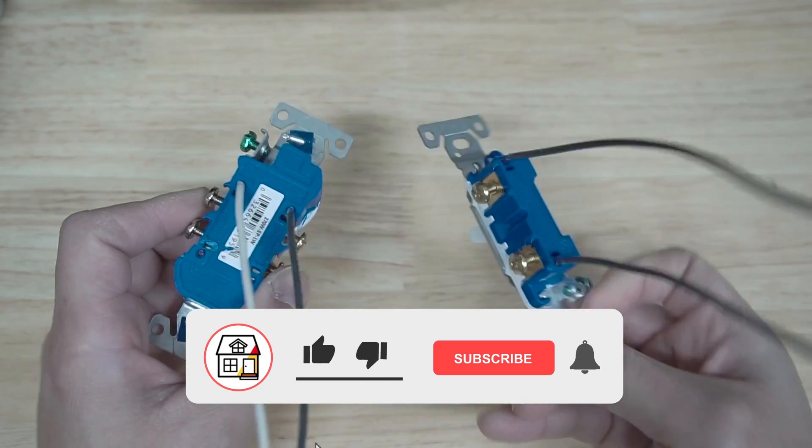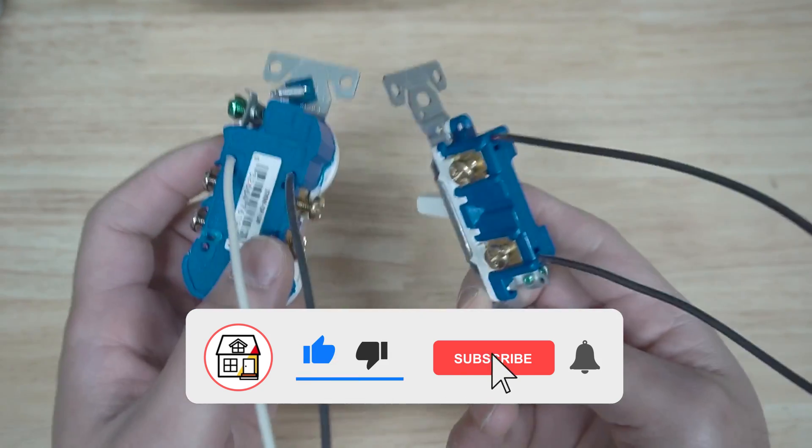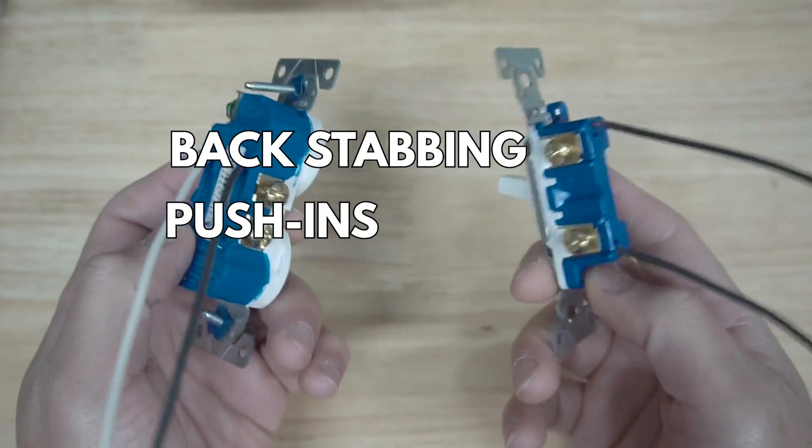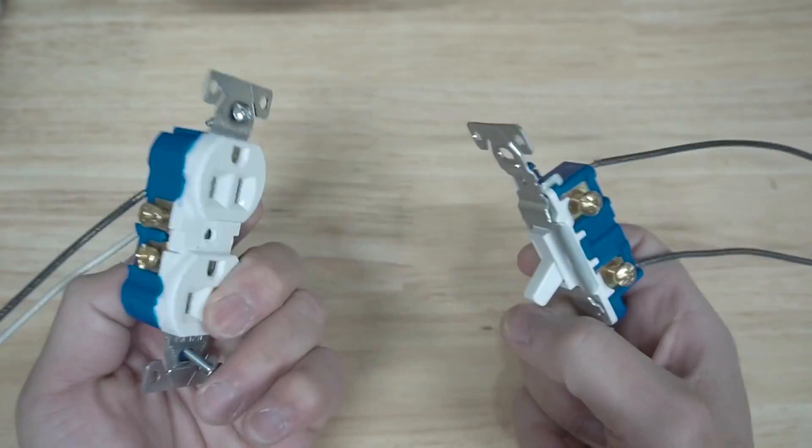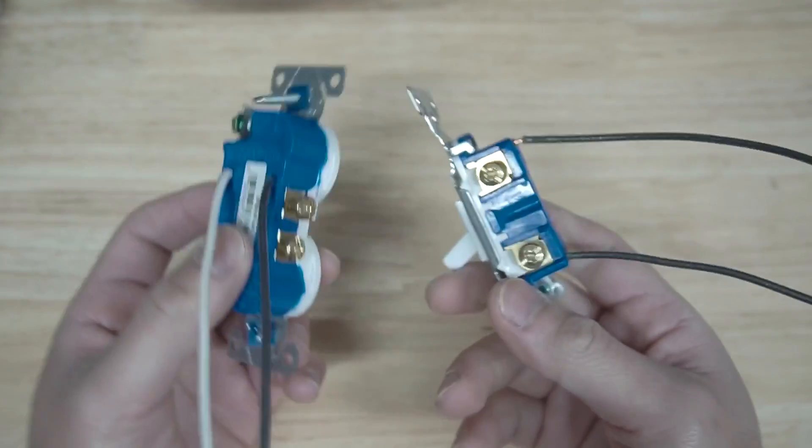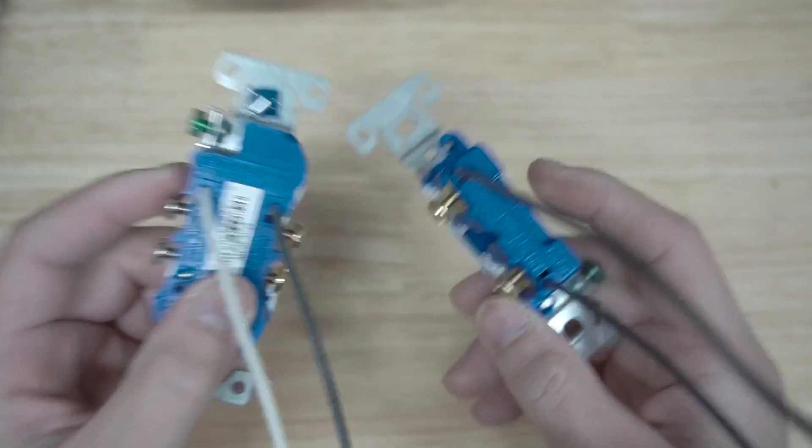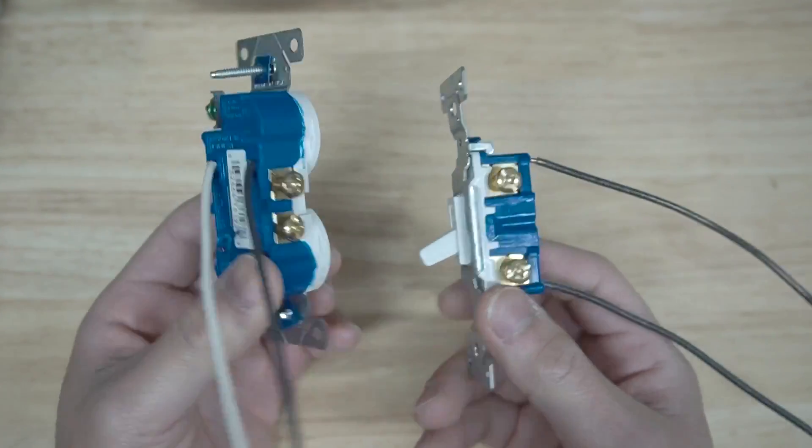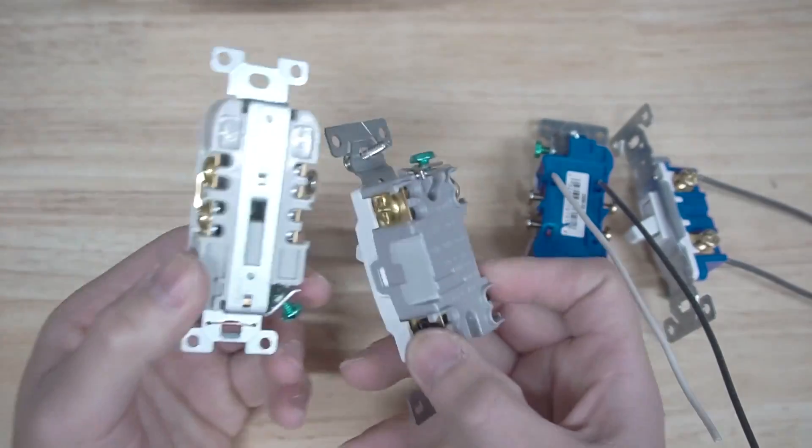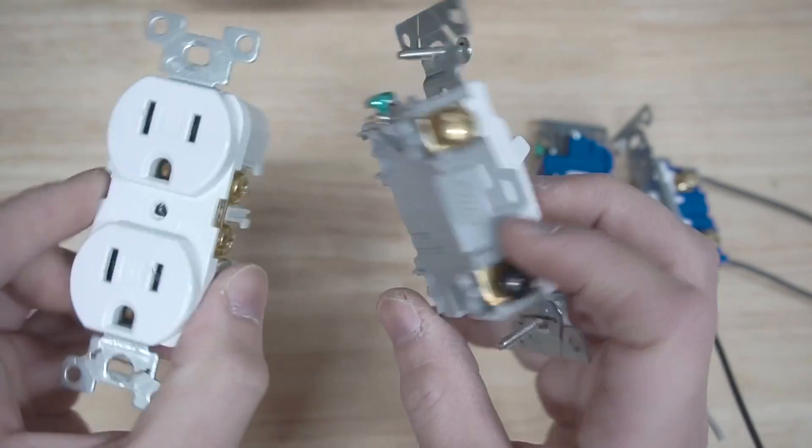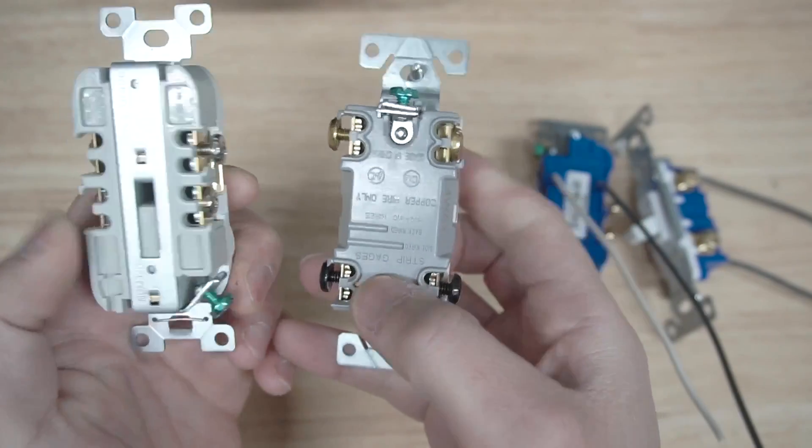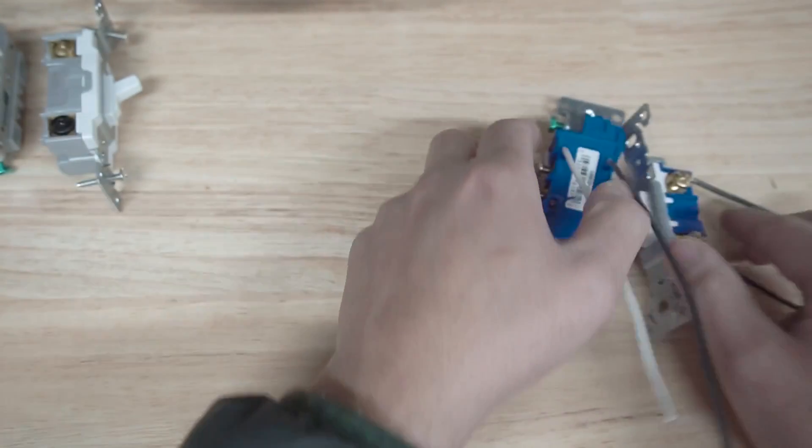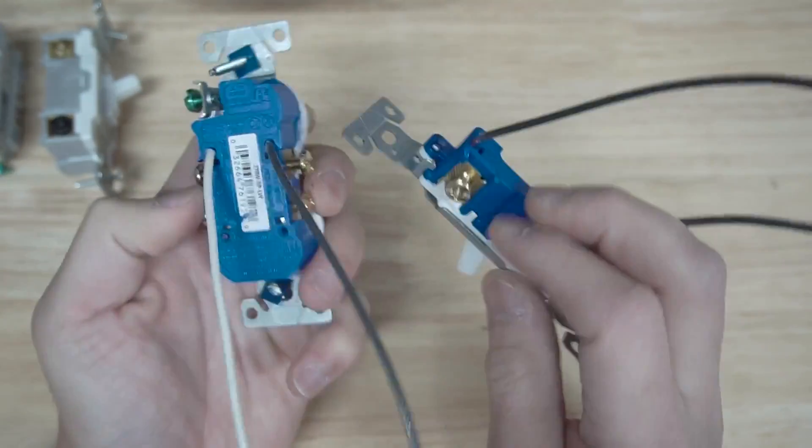Today's topic is speed wiring, also known as backstabbing or push-in terminals. These are commonly used on switches and receptacles, and they are located at the back, mostly on residential grade receptacles and switches. If we look into the commercial grade versions, you can see that they are not the same. These are back wires, and we're going to go into that later on.